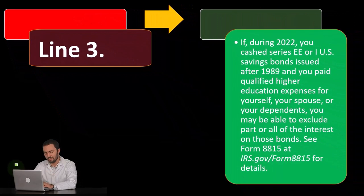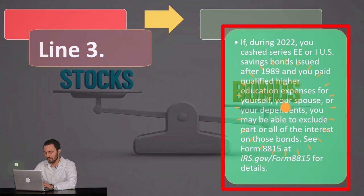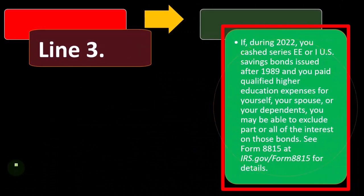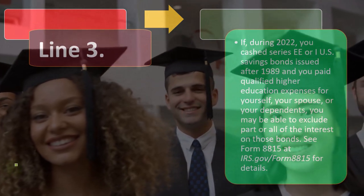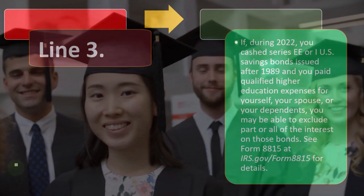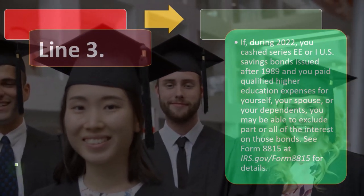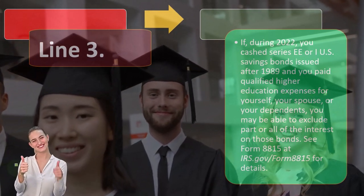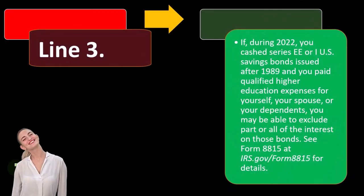Line 3: if during 2022 you cashed Series EE or I savings bonds issued after 1989 and you paid qualified higher education expenses for yourself, your spouse, or your dependents, you may be able to exclude part or all of the interest on those bonds. If you have those EE education bonds in place, take a look at form 8815 for more details.